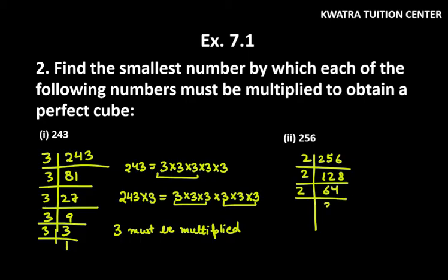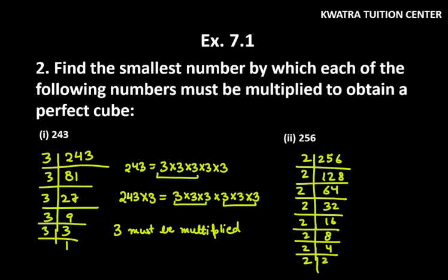64 divided by 2, you will get 32. 32 divided by 2, you will get 16. Then divide by 2 again, you get 8. Again divided by 2, you get 4. Again 2, you get 2 and 1. One factor of 2 is required to make a group of three. So 2 must be multiplied to obtain a perfect cube.